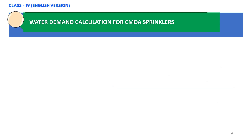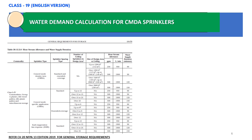We have already determined the actual density based on the storage height, and we know the area of sprinkler operation is 2000 square feet from the previous slide. Now we shall calculate the hose stream allowance and water supply duration. From table 20.12.2.6 in NFPA 13 2019 edition, since we have Class 4 commodity and are using CMDA sprinklers with an area of sprinkler operation of 2000 square feet, the required hose stream allowance will be 500 gpm and the water supply duration will be 120 minutes.